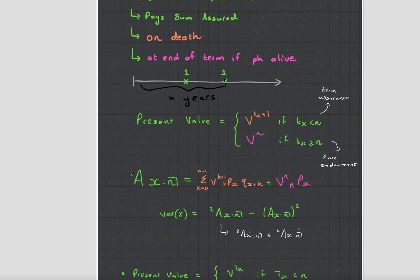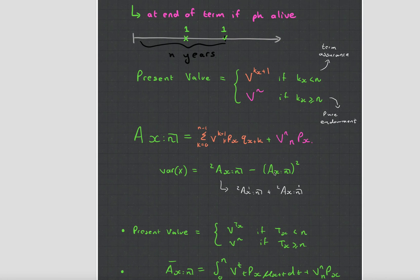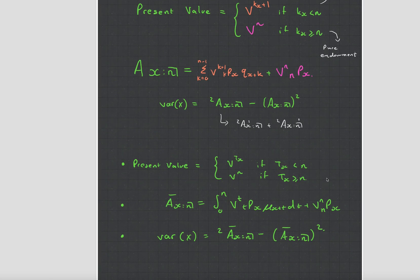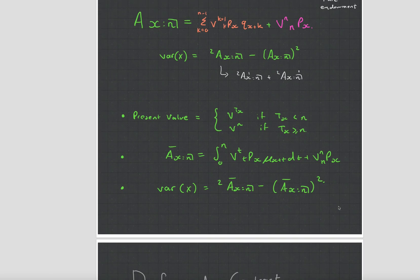Anyway you can see that the formula AXN there is no 1 because it can depend on either of them and you can see it's just adding the orange which is term assurance and the pink which is pure. The variance follows the exact same pattern and it's kind of the same idea when it becomes payable immediately.